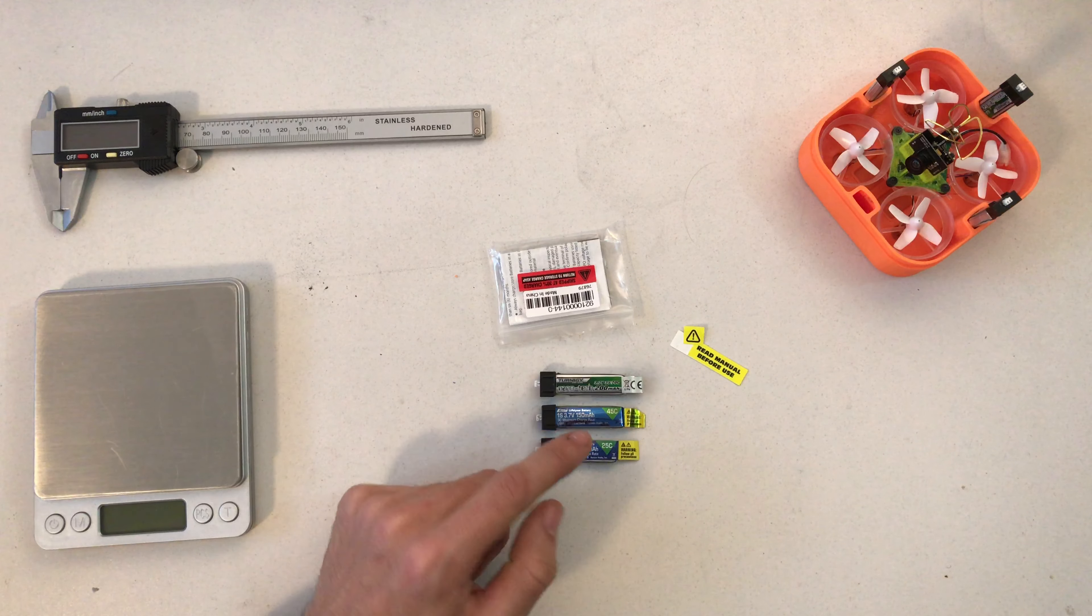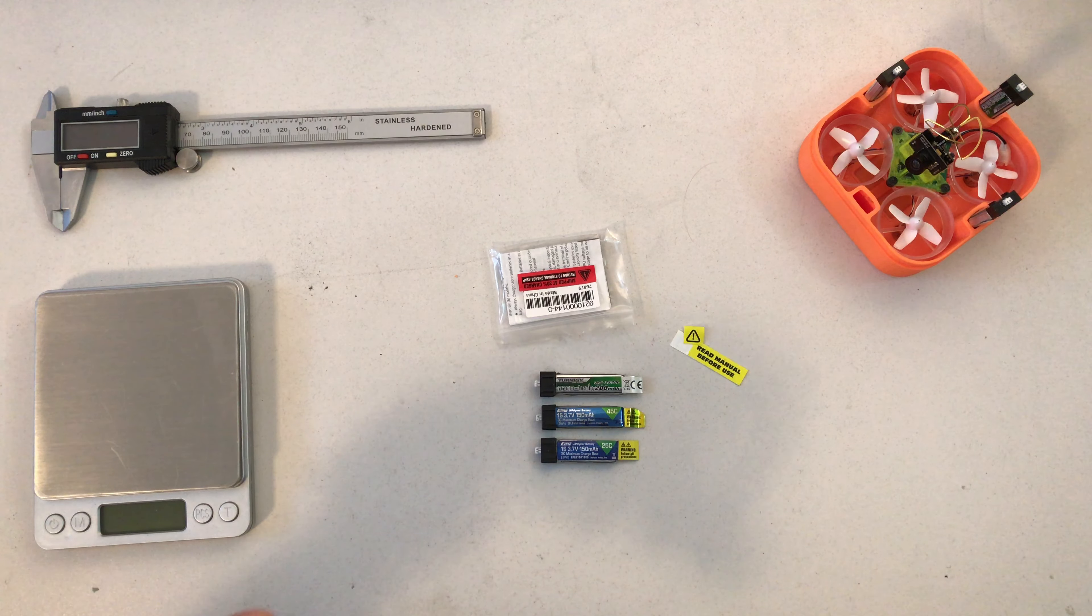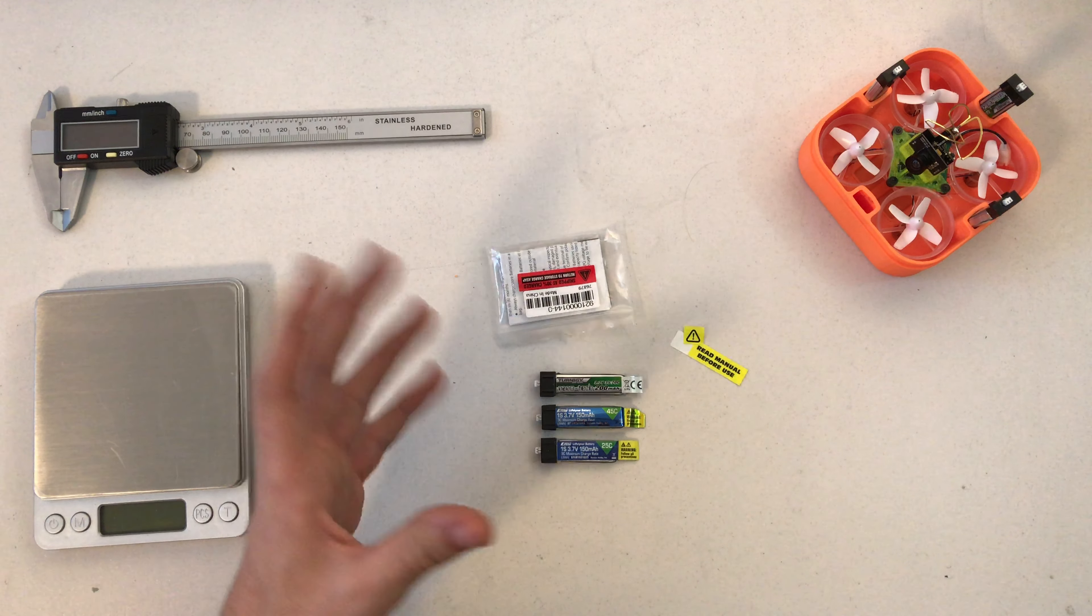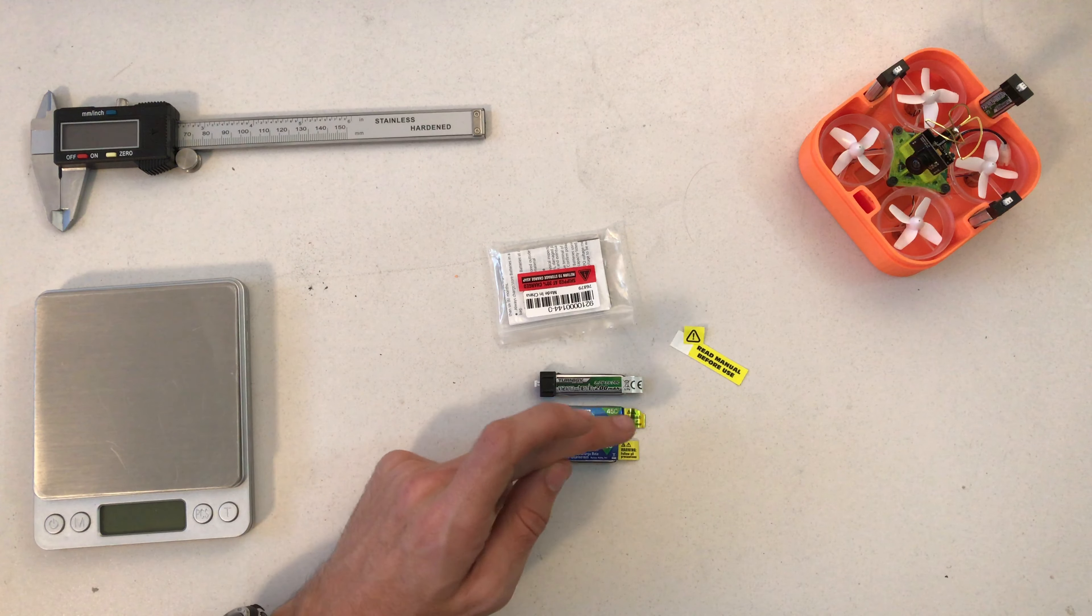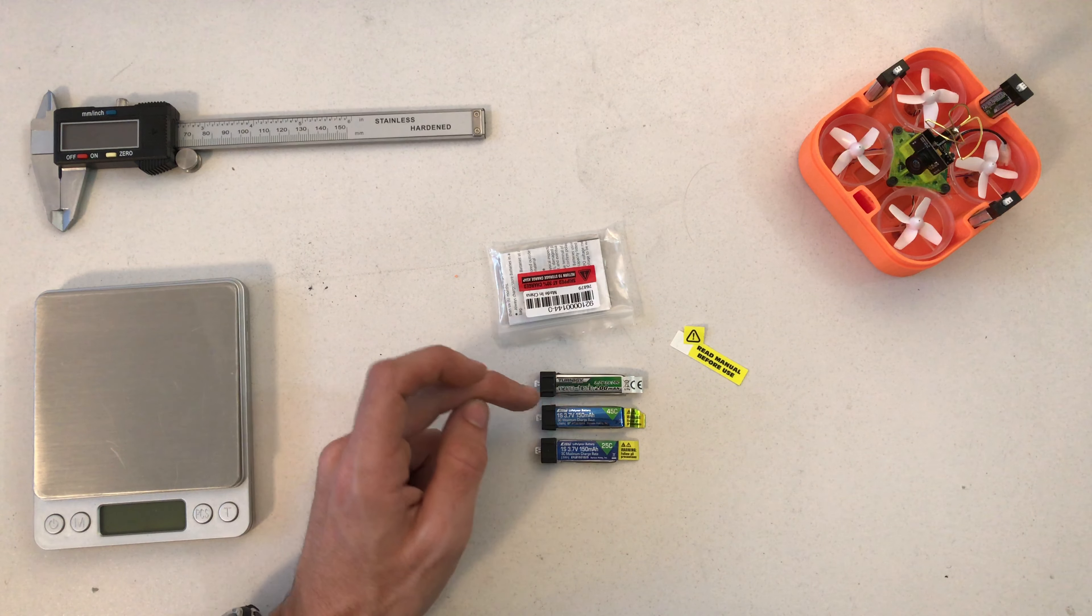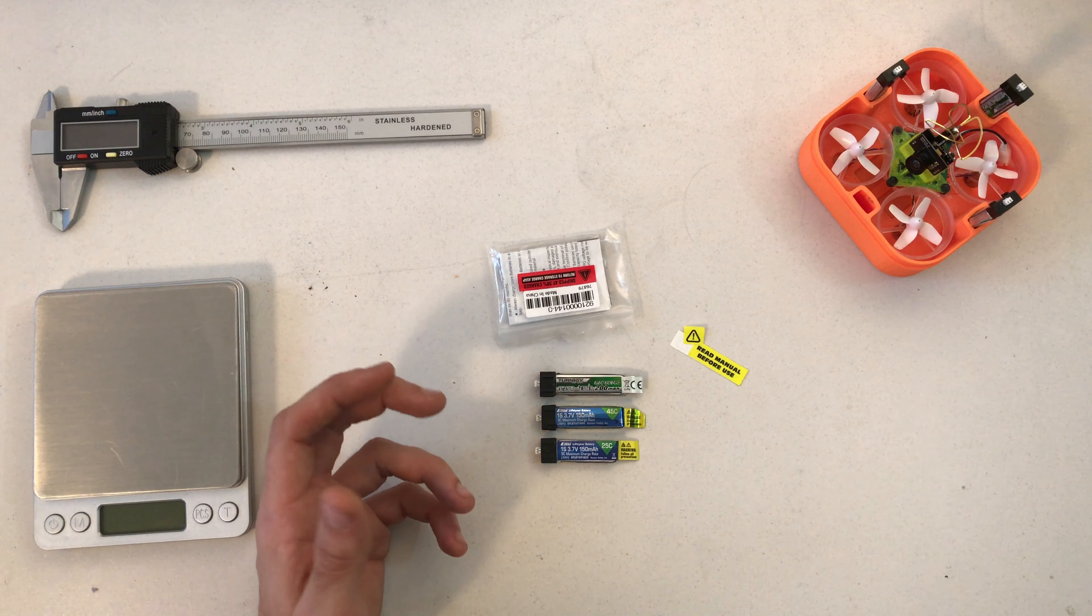Going from the 25 to the 45C, it feels lighter. It's slightly heavier, but it feels lighter. But going from the 45C eFlights to the Nanotech 200mAh, it does feel heavier. I wasn't expecting that.